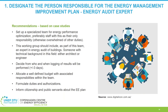For step one — designating a person in charge of a working group for the energy management improvement plan — some recommendations based on case studies are: set up a specialized team for energy performance optimization, preferably staff with this as their only responsibility, otherwise they might be overwhelmed with other duties. The group should include at least one person expert in energy audit of buildings, someone with a technical background in the field, which could be an architect or an engineer.